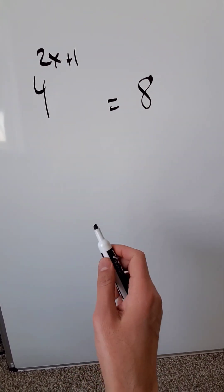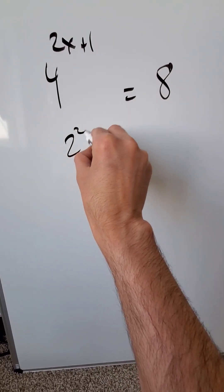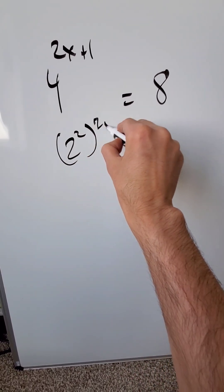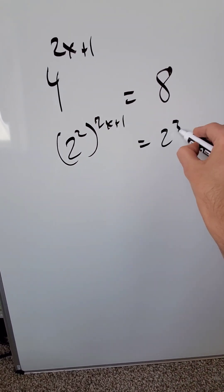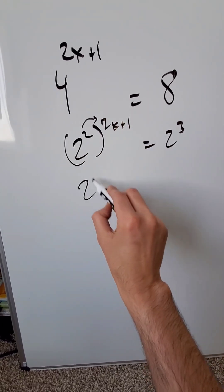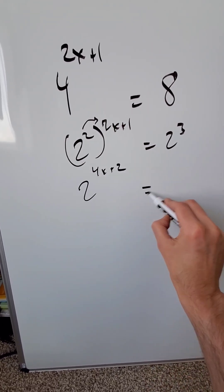I have 4 to the power of 2x plus 1 is equal to 8. Convert everything into base 2. 2 squared to the power of 2x plus 1 is equal to 2 cubed. Push this 2 out. You'll have 2 to the power of 4x plus 2 is equal to 2 cubed.